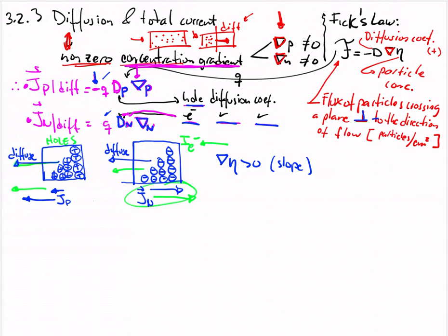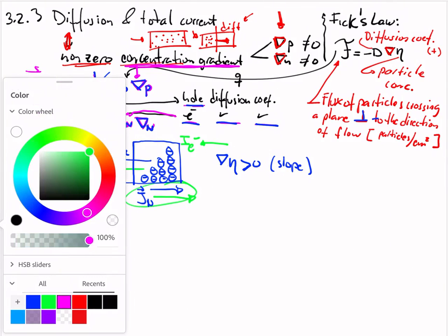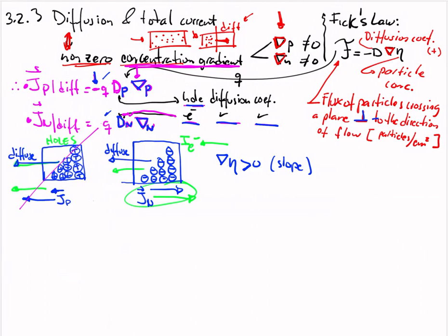In both cases, the concentration gradient — which corresponds to the slope in the diagram — is positive. The slope shown in the graph represents ∇p or ∇n and is positive.